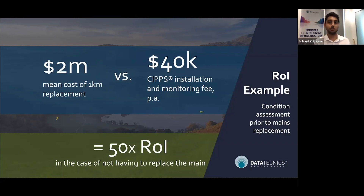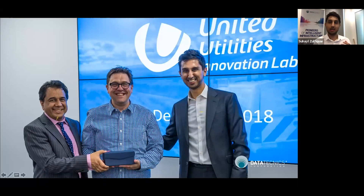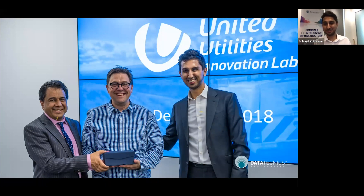With SIPS we want to make the life of our utility customers easier by empowering them with high quality insight so they can make more informed decisions. We've worked closely with utilities in the UK identifying their pain points and ensuring SIPS addresses these. This began with United Utilities, the largest provider of water and wastewater services in the UK, when in 2018 we were admitted onto their Innovation Lab. This led to initial deployments with United Utilities, and we're now installing our technology on their large diameter critical trunk mains — in fact I've literally just got back from site to deliver this presentation.